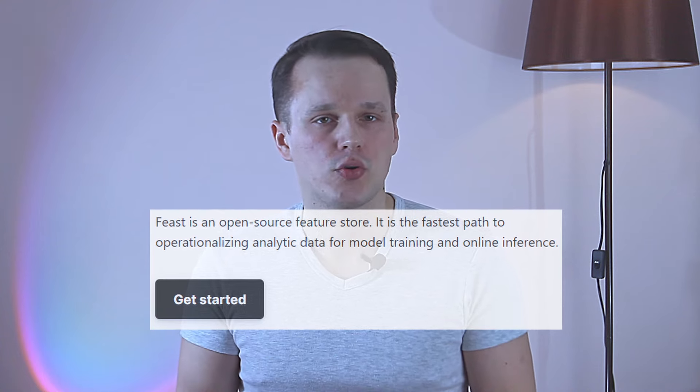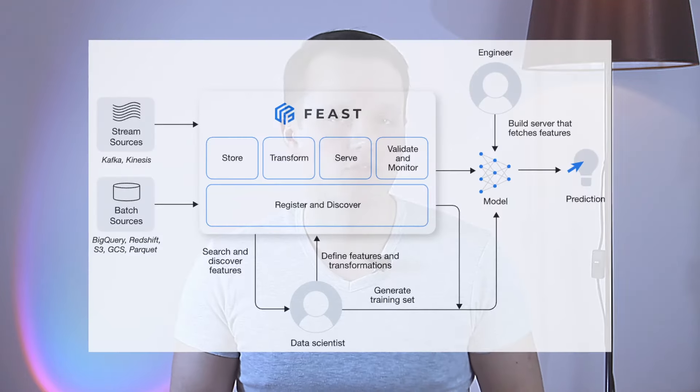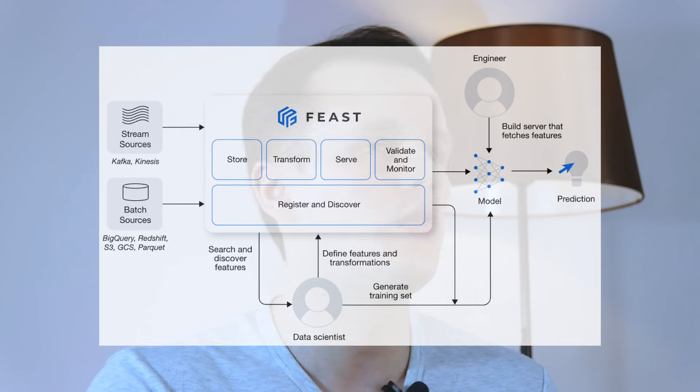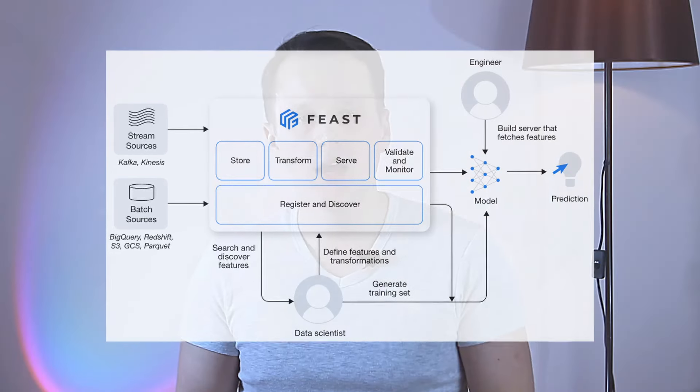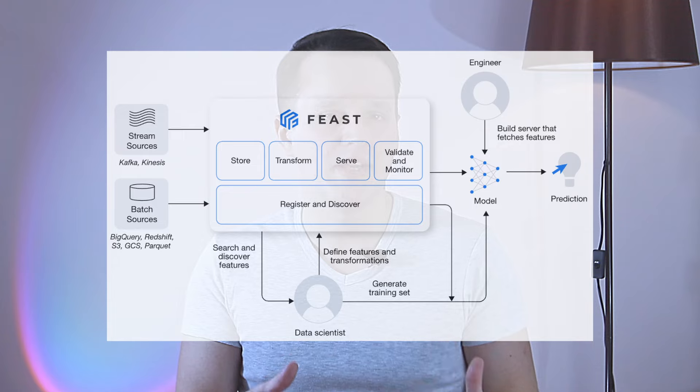I enjoy learning by example, so let's address a concrete feature store implementation and look at Feast. The name Feast is combined from the words feature and store. Feast is open source and it is the fastest path to use analytic data for model training and online inference, as per the official website. Feast can serve features to models from a low-latency online store for real-time prediction, or from an offline store for batch scoring or model training. Both storages are not shipped with Feast and should be provided externally.